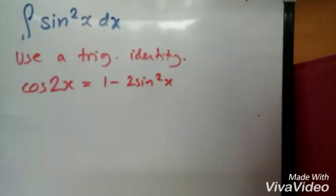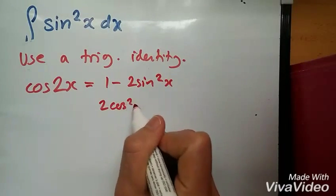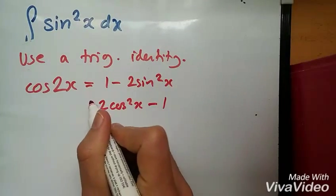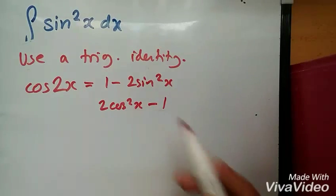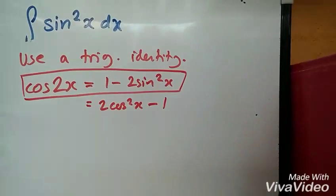Alternatively, if you want to find cos squared x it would also be 2 cos squared x minus 1. This would be the alternative formula. We want this one, okay?